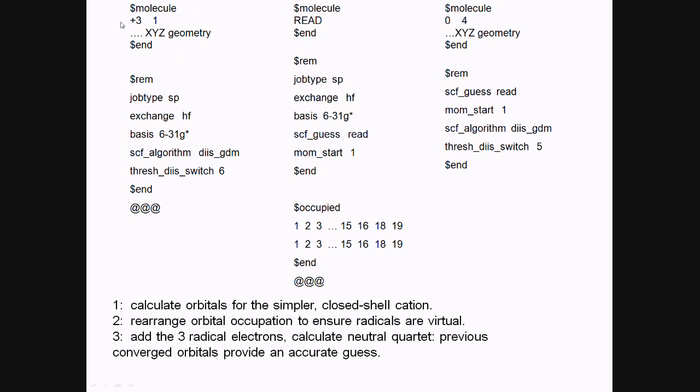So, the first calculation, we take out the three unpaired electrons, and we calculate a closed-shell reference. So, this is a trication, and the closed-shell reference should be pretty easy for Q-Chem to converge. We use the 6-31G* basis and DIIS algorithm until we get to 10 to the negative 6 Hartree convergence, and then we switch to GDM.